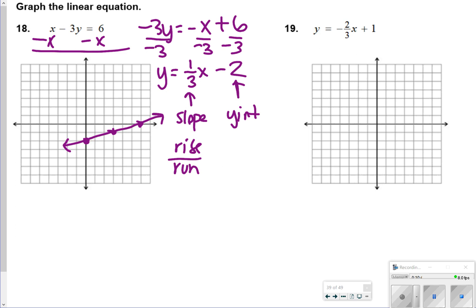Number 19 is already in slope-intercept form, so I don't have to rewrite anything for that one. My y-intercept is positive 1. And then my slope is negative 2 over 3. So that means I'm going to fall to negative 2 and then run 3. 1, 2, 3. Same thing. Down 2 over 3. And then again, I'm just going to erase my tracks here and connect my points.